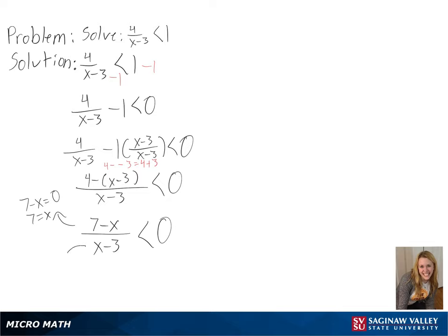So, in this case, we will get 3 and 7. So, we need to test to the left of 3, in between 3 and 7, and to the right of 7.